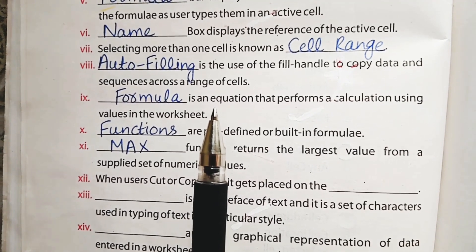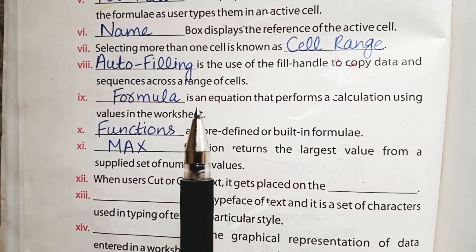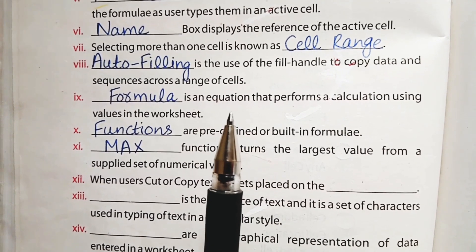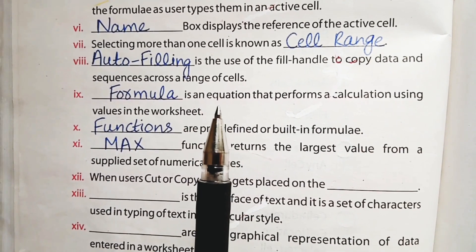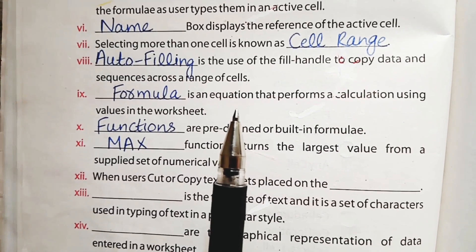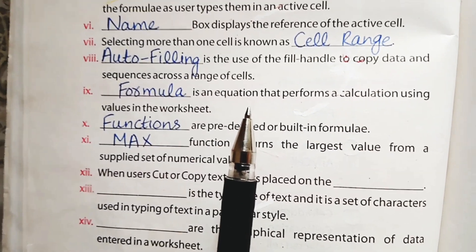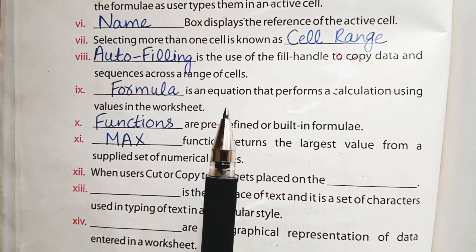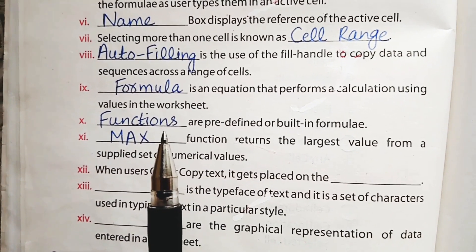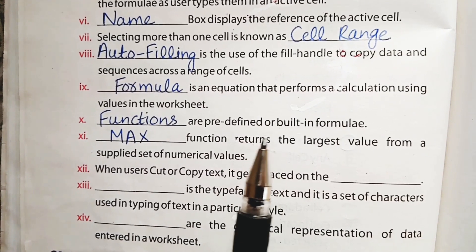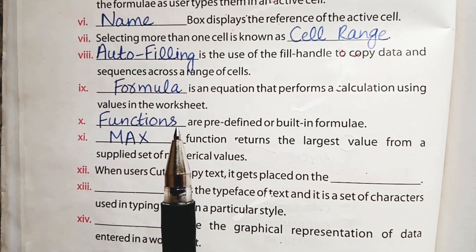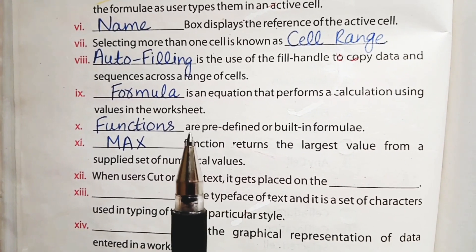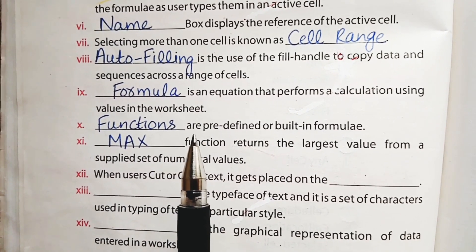In a formula, we perform calculations using the values of the worksheet. A formula begins with an equal sign, followed by data values or cell references, then operators, then the next data value. Part number 10: Dash are predefined and built-in formulas. The answer is functions — functions are predefined or built-in formulas. For example: SUM function, PRODUCT function, AVERAGE function, SQUARE ROOT function.